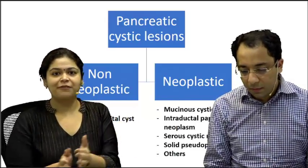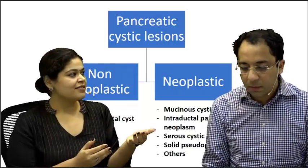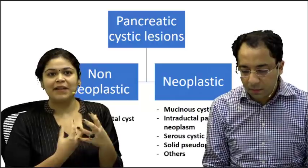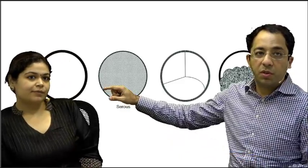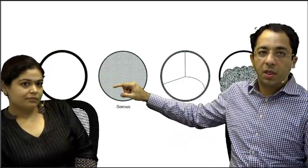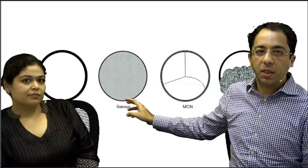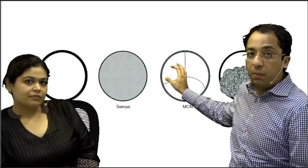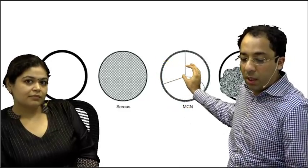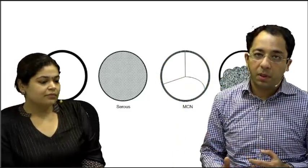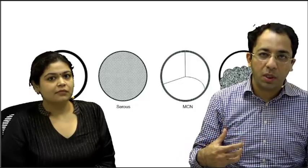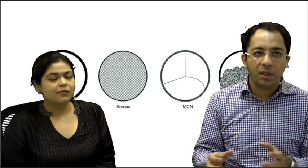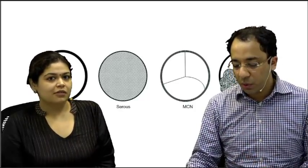Mucinous, IPMN, and serous are important to differentiate because serous is benign whereas the other two have malignant potential. Looking at the morphology: a pancreatic pseudocyst, the serous with its multi-cystic appearance, the mucinous cystic neoplasm with its oligocystic lesion, and IPMN — where the tumor is actually intraductal. The multi-cystic appearance in IPMN is due to duct ectasia, with dilatation of ducts giving rise to that typical cystic appearance.